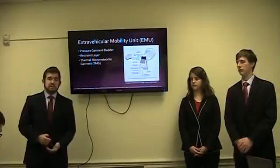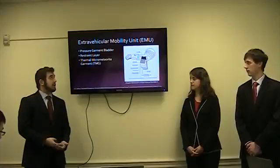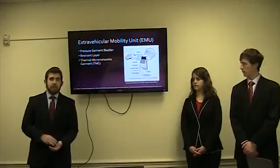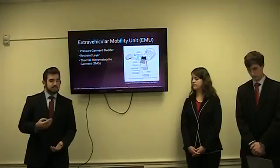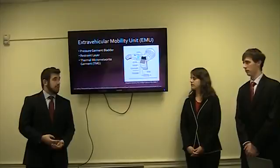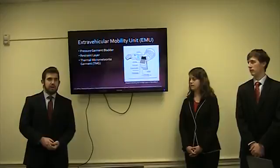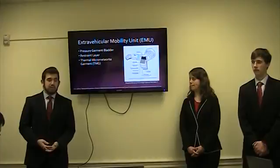There are two main types of spacesuits: soft suits and hard suits. The suit currently used on EVA is the soft suit, otherwise known as the Extravehicular Mobility Unit or EMU. As shown on the diagram, the three main layers of the EMU are the pressure garment bladder, the restraint layer, and the thermomicrometeorite garment. The pressure garment bladder is a polyurethane-coated nylon that holds all the air in the suit. The restraint layer bears all the pressure and loads generated during movement. The thermomicrometeorite garment protects against solar radiation and high-velocity microparticles.